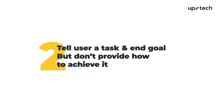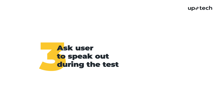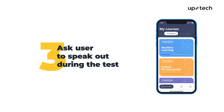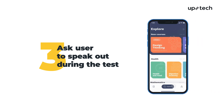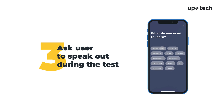Once the users have settled down, we provide them with a task and an end goal. It's important to note that the users are not provided with instructions on how to achieve the goals — they would have to figure that out on their own. For example, we'll get the user to find a needed course via a step-by-step wizard on the prototype app.